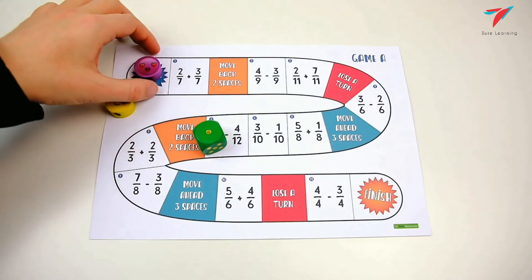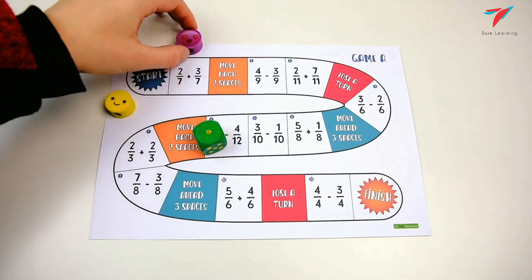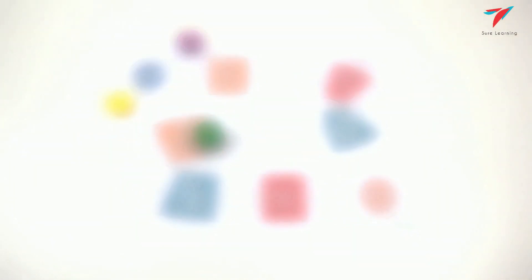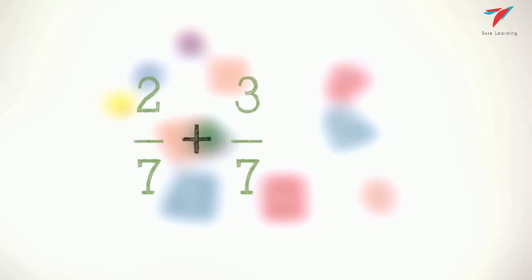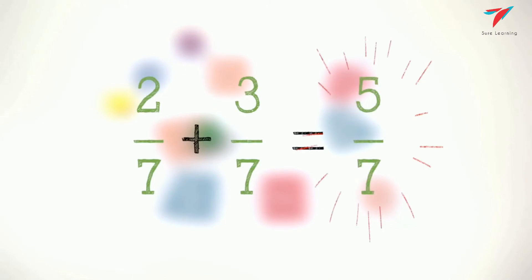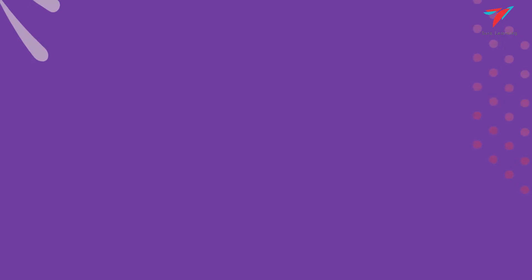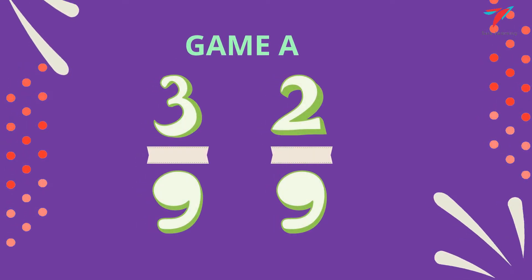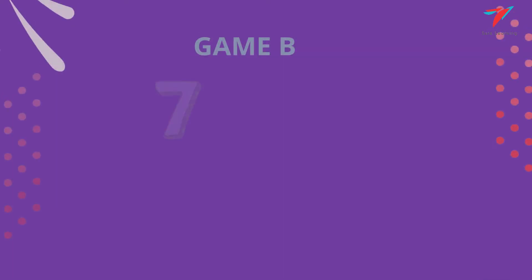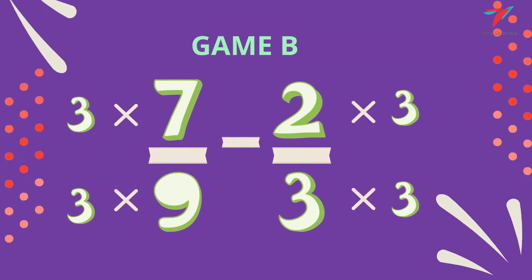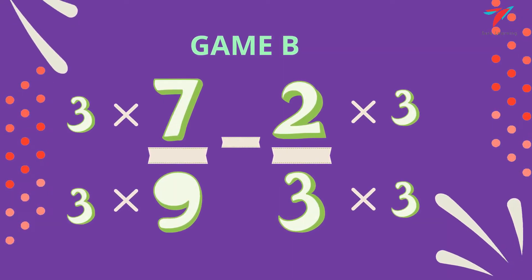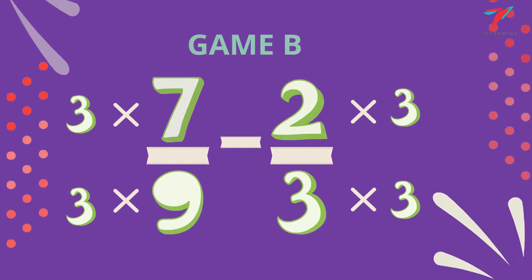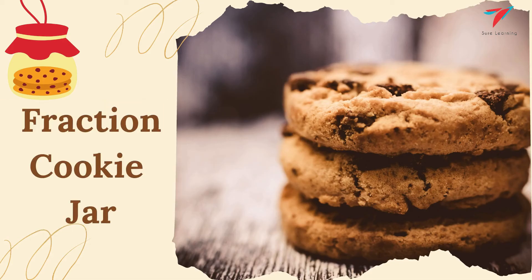Once you have explicitly taught your students how to add and subtract fractions, allow them to play this interactive board game in pairs to practice their new skills. Print out and laminate the game board. The only materials required are counters and dice. There are two versions: Game A requires students to add and subtract like fractions only, and Game B requires students to add and subtract fractions with related denominators.